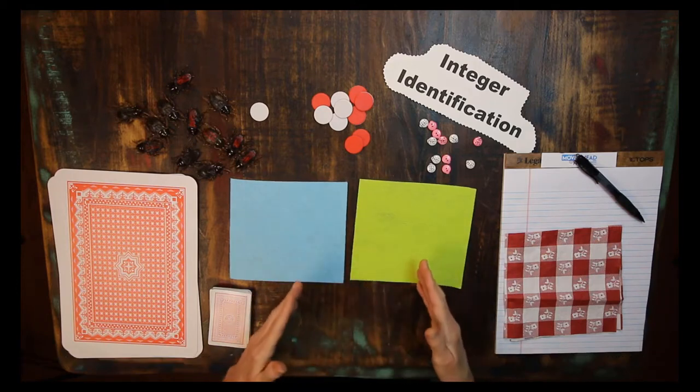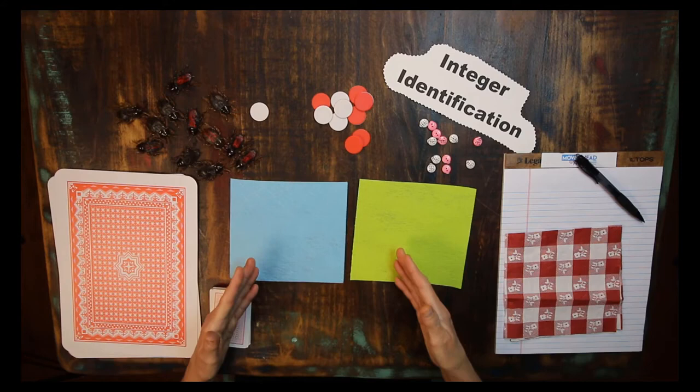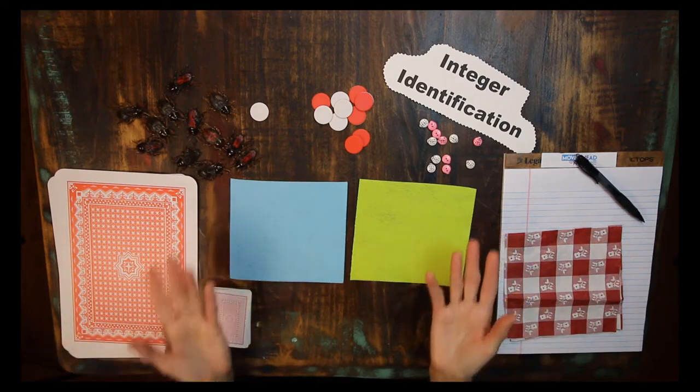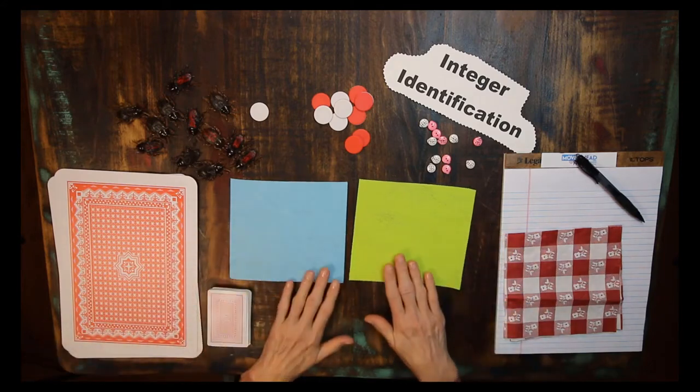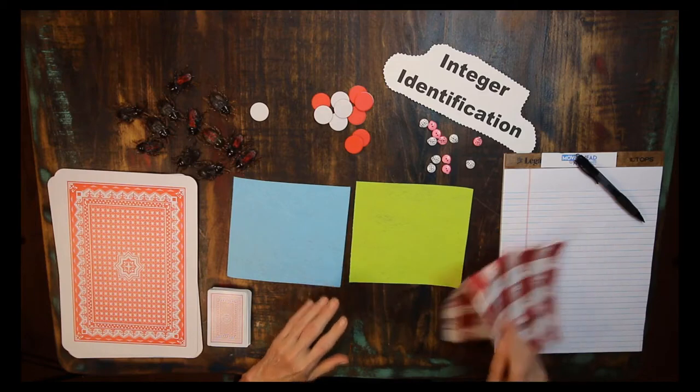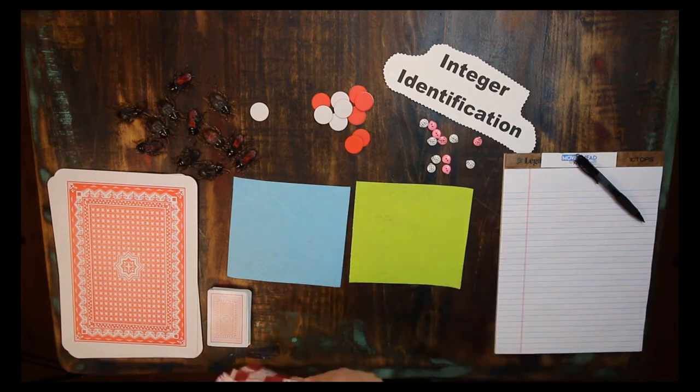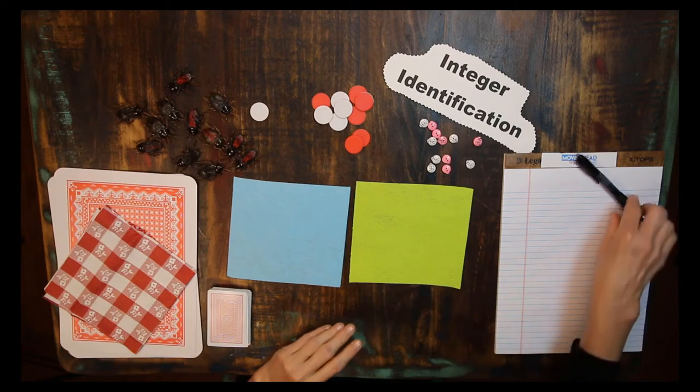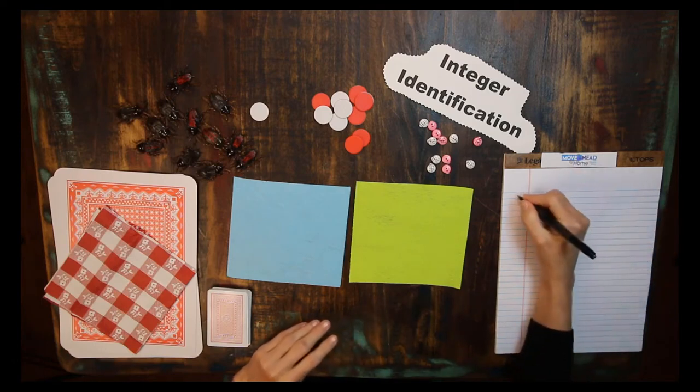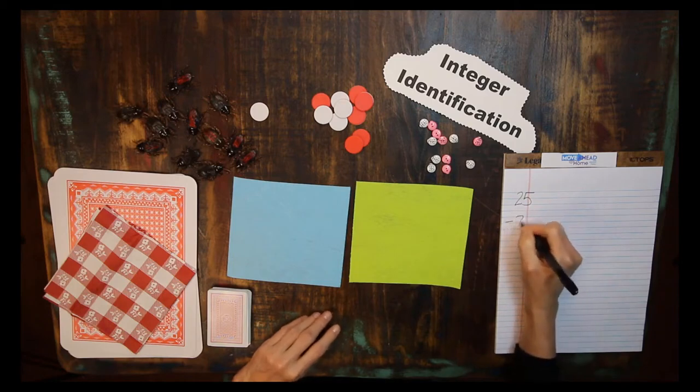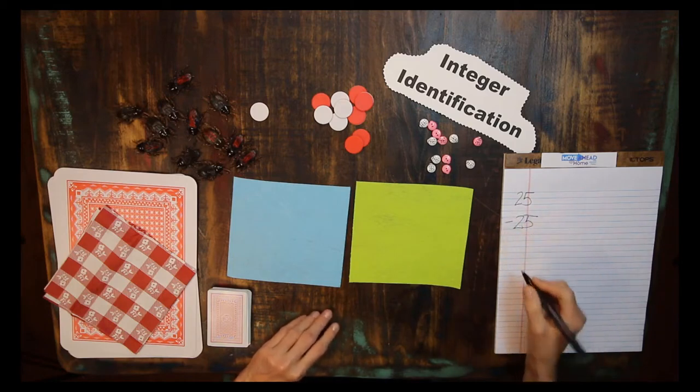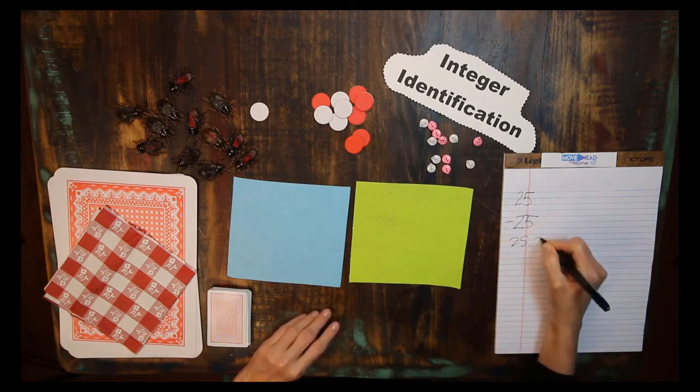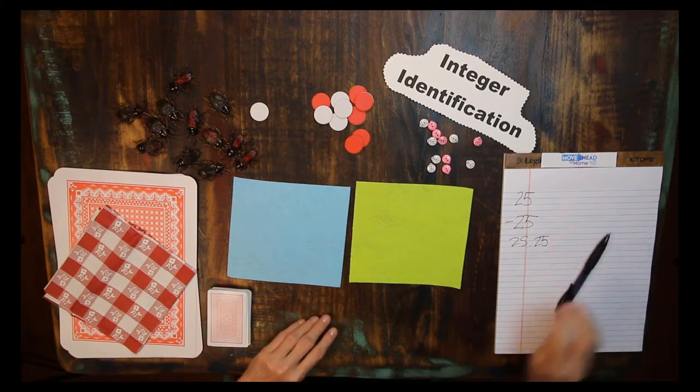Let's start where I needed to when I began teaching 6th graders. What's an integer? An integer is any whole number that's not a fraction. An integer can be positive, negative, or zero. 25 is an integer. Negative 25 is an integer but 25.25 is not an integer.